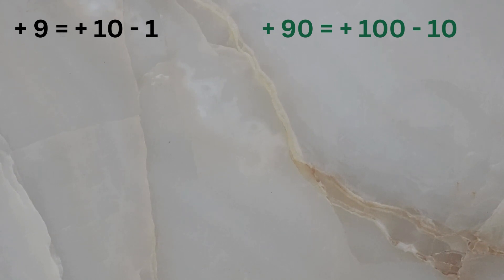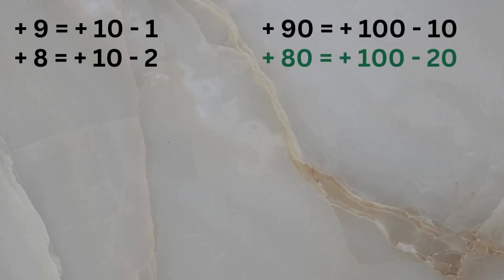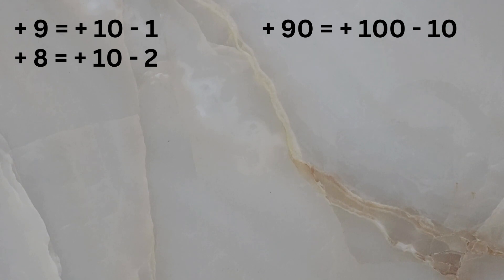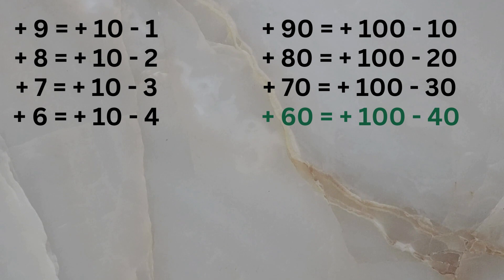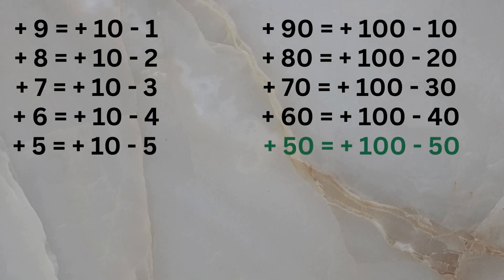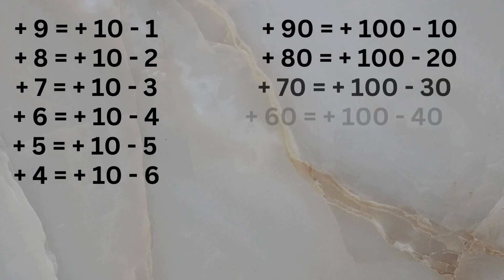The big friend formula for adding nine becomes the big friend formula for adding eight when used on the tens and hundreds place. The big friend formula for adding seven when used on the tens and hundreds place becomes the big friend formula for adding six, and the big friend formula for adding five becomes...